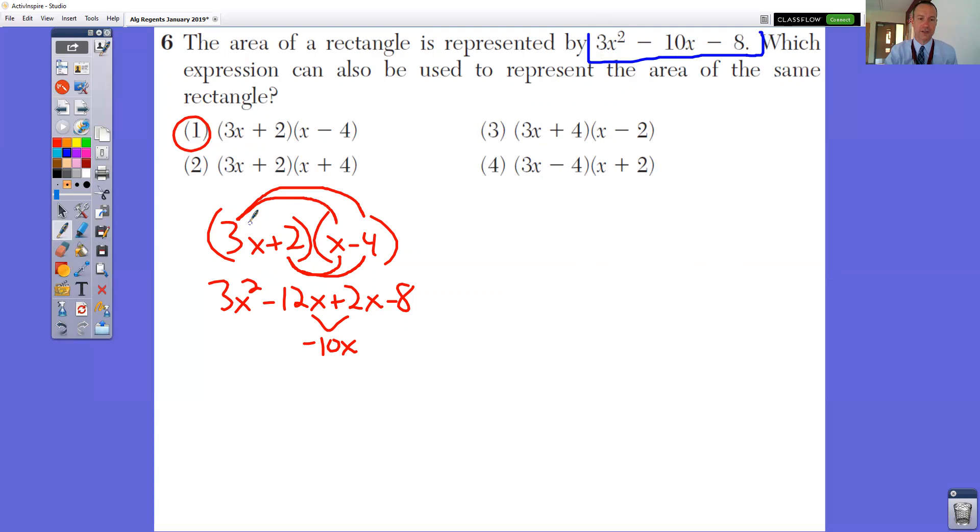First, outers, inners, last, multiply, and then add together your outers and your inners. When you do that to answer number one, notice that we get that same exact thing. We get 3x squared minus 10x when we add together our outers and our inners, and then minus 8.